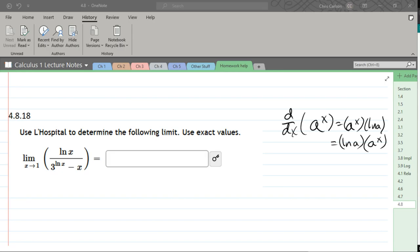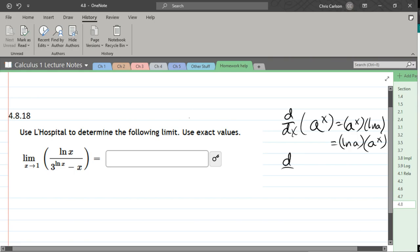I'm writing down the derivative of a to the x, and the derivative of a to the x is itself a to the x times the natural log of a. You could also write the natural log in front times a to the x second. The other derivative we're going to need is the ln of x derivative, and this one is just 1 over x.